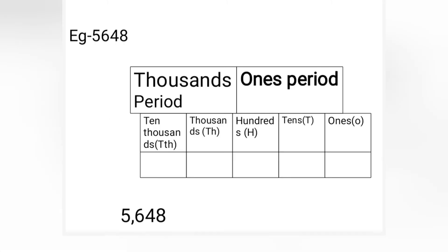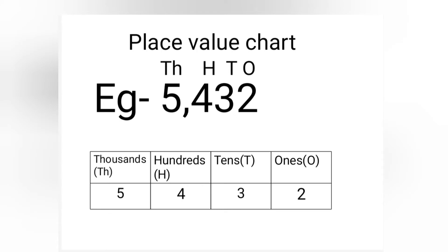Observe the pattern here. Under the ones period, the ones, tens, and hundreds place values come. Thousands and ten-thousands place values come under the thousands period. So there should be a comma to separate the ones period and the thousands period. Now we will understand how to write numbers in a place value chart according to their place values.